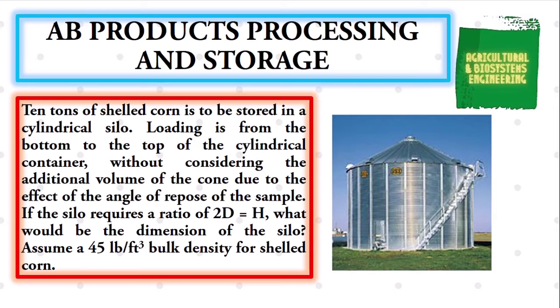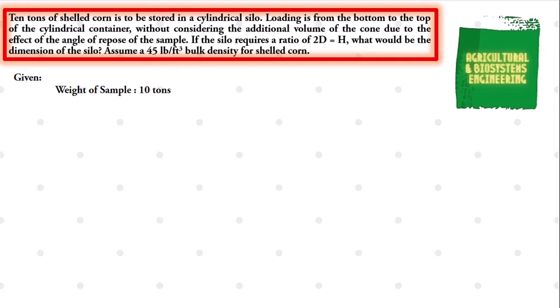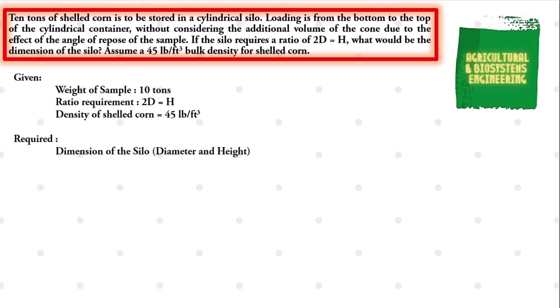To begin with, we first identify our given. First, we have the weight of the sample, which is the shelled corn, to be 10 tons. Next, the ratio requirement of twice the diameter is equal to height. Finally, the density of the shelled corn of 45 pounds per cubic feet. The required in the problem is the dimension of the silo, meaning its diameter and the height. Since the silo has the shape of a cylinder, we only take into account the diameter and the height.